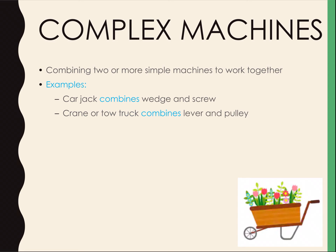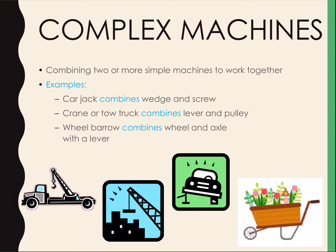Then we have complex machines — this is where you combine two or more simple machines that work together. An example would be a car jack, which combines a wedge and a screw. A tow truck combines a lever and a pulley. A wheelbarrow combines a wheel and axle with a lever: the wheel and axle is at the bottom, and the lever is where you're pushing — you push down to get the load off, then pull it. So it uses two simple machines combined.